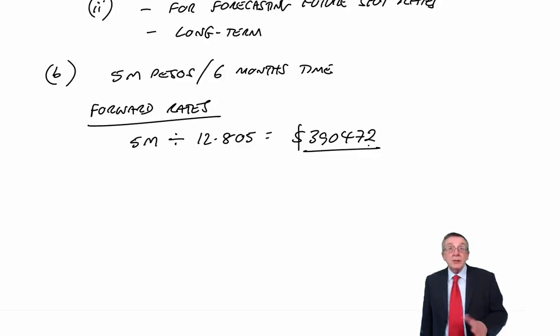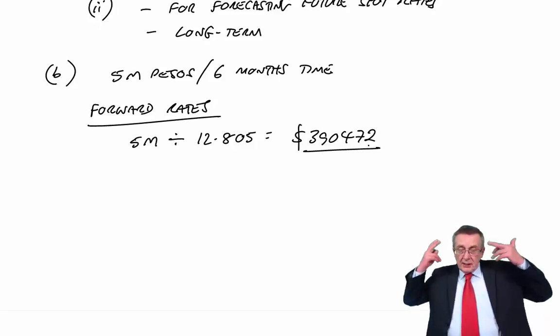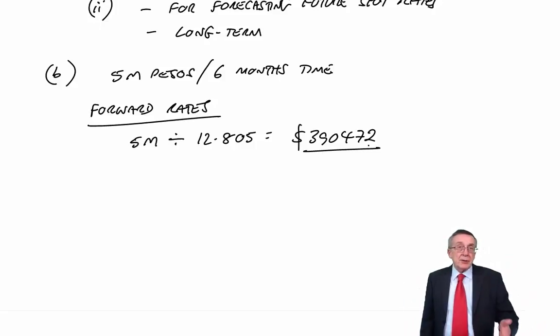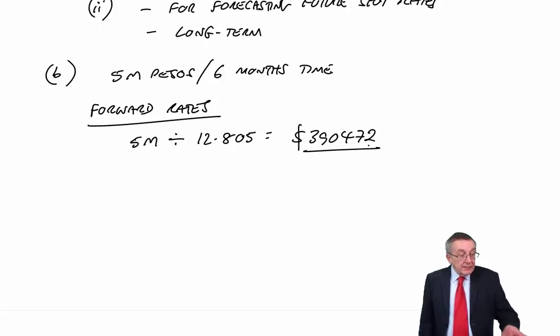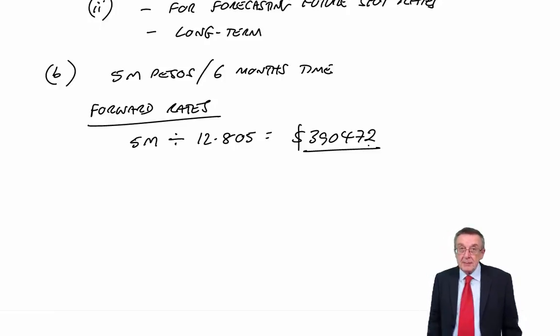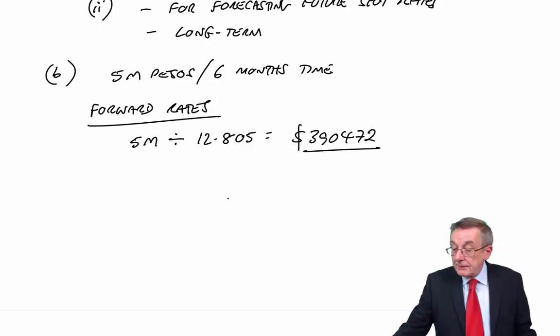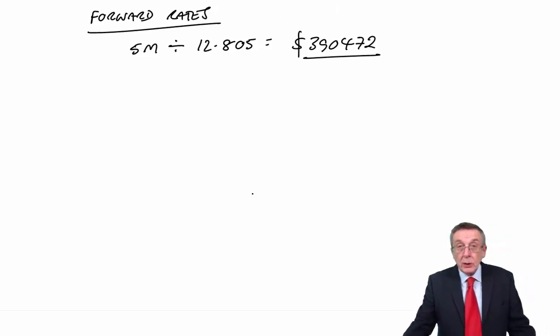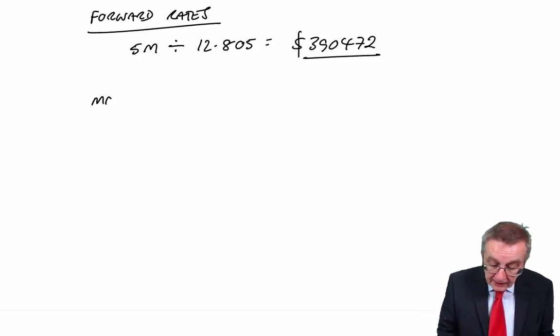How you remember which rate, remember it's always whichever's worse for us. It's the bank who makes the profit. Since we're paying money, dividing by the smaller of the two exchange rates will end up with us having the biggest payment. That's forward rates, very quick. What inevitably always takes longer is money market hedging.